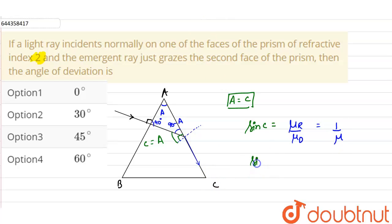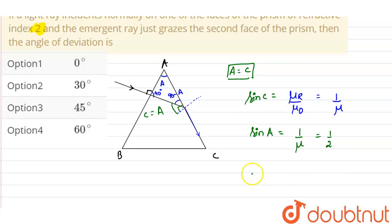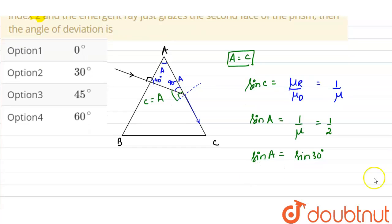So from here, sine of A can be written as 1 upon refractive index of the prism, that is 2. So it will be 1 by 2. So from here, sine A will be equals to sine 30 degrees. So we can say that our angle of prism is 30 degrees.